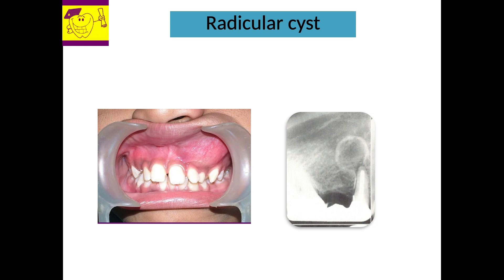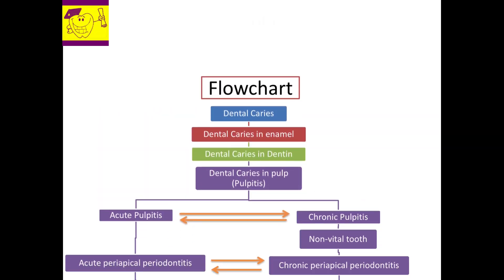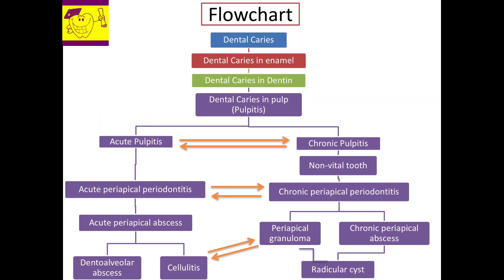The patient will have a slow, expansive bony hard swelling in relation to the carious or non-vital tooth. Radiograph of the involved tooth will show a well-circumscribed radiolucency measuring more than 1.5 cm, surrounded by a radio-opaque border. To recapitulate, this flowchart depicts the events that occur in both the acute phase and the chronic phase following pulpitis.